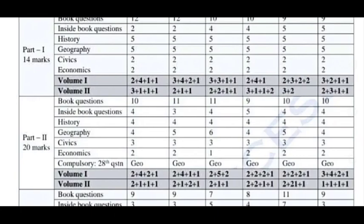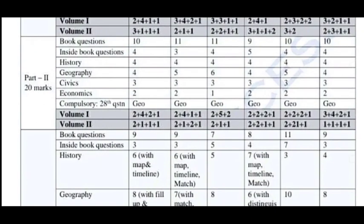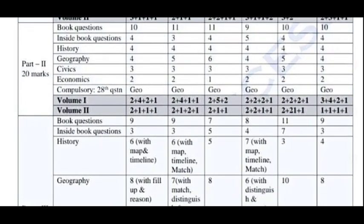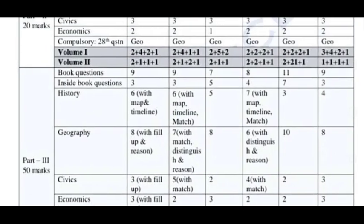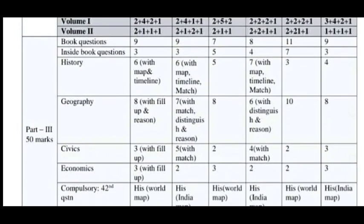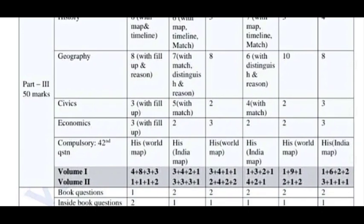If you look at compulsory questions, you can see they appear across PTA 1, 2, 3, 4, 5, 6, and 7. If you look at the PTA, you can see the Jogar Fill sections. Jogar Fill may be compulsory questions — chances are very high. That's why you should look at Volume 1 and Volume 2. In the analysis of PTA 1 and 2, there are 7 book questions with different variations. If you look at Jogar Fill, Civics, Economics, etc., and compulsory questions, you can see the history world map.